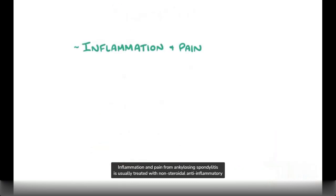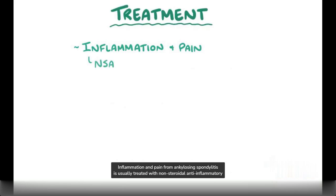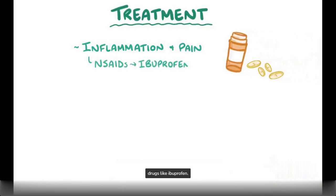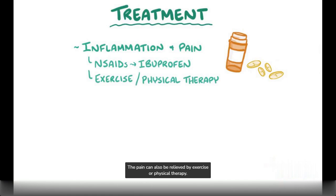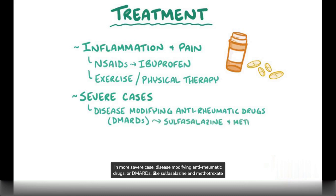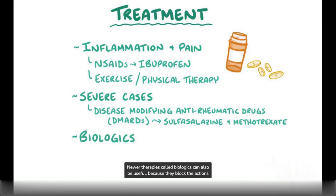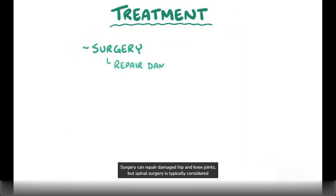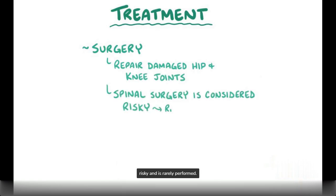Inflammation and pain from ankylosing spondylitis is usually treated with non-steroidal anti-inflammatory drugs, like ibuprofen. The pain can also be relieved by exercise or physical therapy. In more severe cases, disease-modifying anti-rheumatic drugs, or DMARDs, like sulfasalazine and methotrexate can be helpful. Newer therapies called biologics can also be useful, because they block the actions of cytokines like tumor necrosis factor alpha and the interleukins.